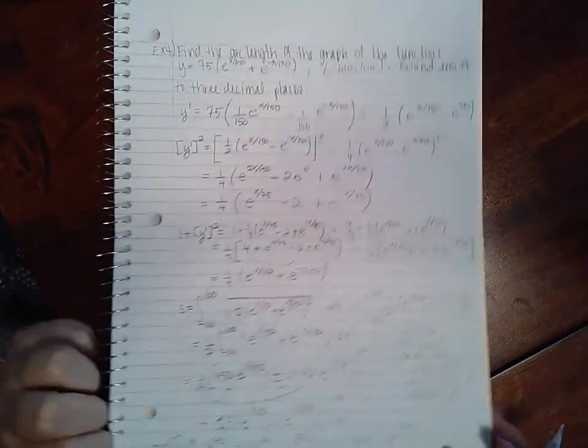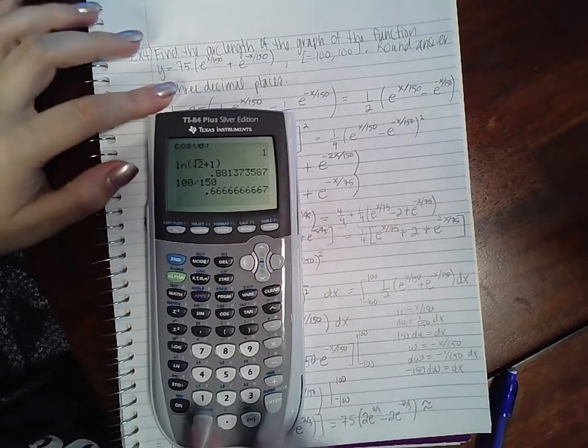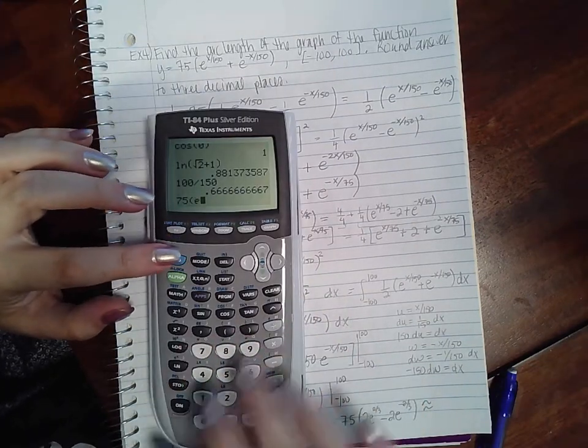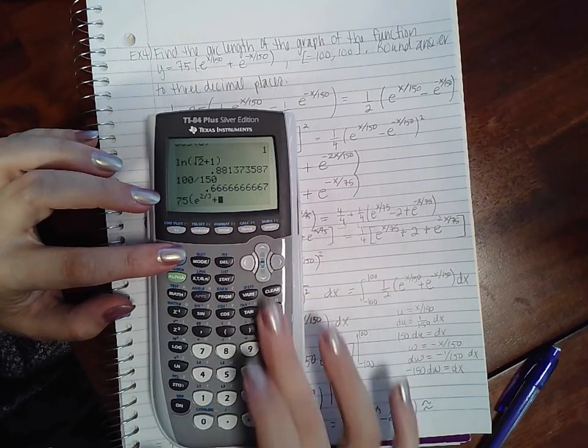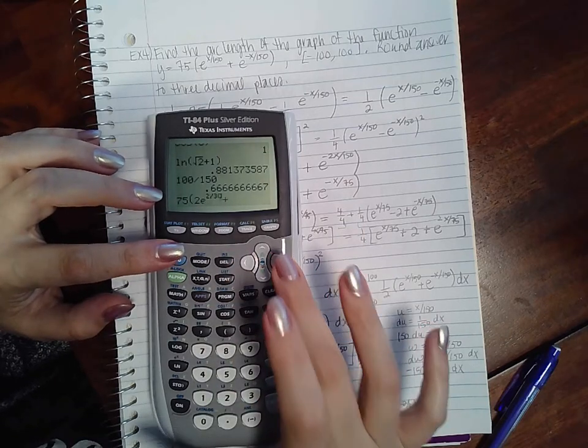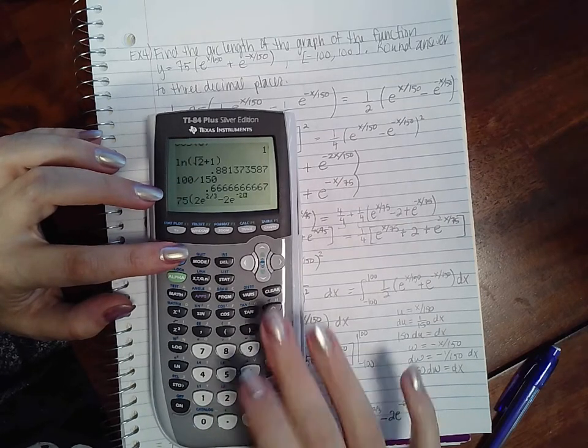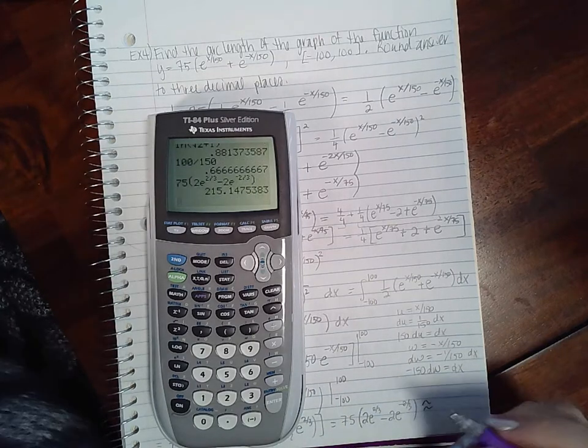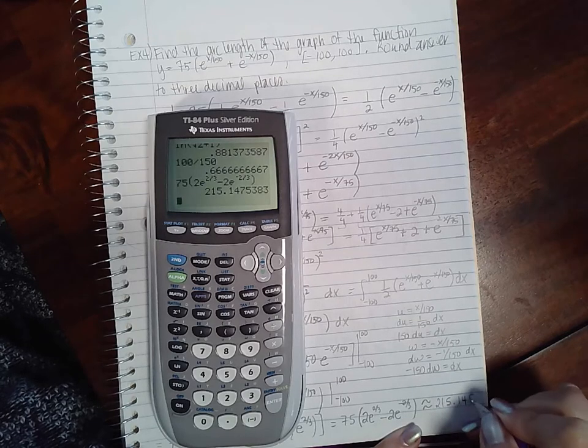And I don't know what that is, but we can plug it into the calculator to round it to three decimal places. So 75 times parenthesis 2 e raised to the 2 thirds minus 2 e raised to the negative 2 thirds. And we get 215.148.